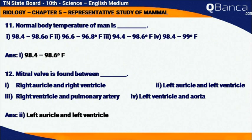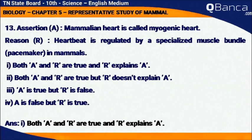Normal body temperature of a man is 98.4 to 98.6 degrees Fahrenheit. The mitral wall is found between the left auricle and left ventricle. Assertion: The mammalian heart is called a myogenic heart. Reason: Heartbeat is regulated by a specialized muscle bundle called the pacemaker in mammals.